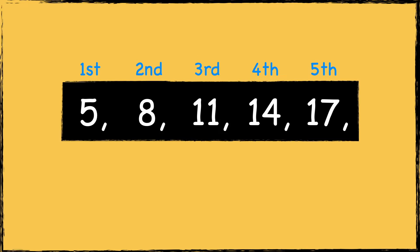So the first term would be n equals 1, the second term would be n equals 2, the third term would be n equals 3, and so on. The n stands for the number or position in the sequence.